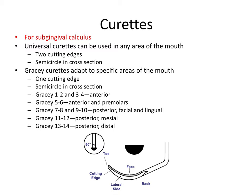Universal curettes can be used anywhere. Gracie curettes are adapted for specific areas of the mouth — they only have one cutting edge but are designed particularly for a very specific area, also semicircular in cross section. Here is a list of five Gracie instruments. You need to know all of these, but fortunately there is a pattern. Each instrument has two numbers, and some have two different names, but we group them in the same category for memorization.